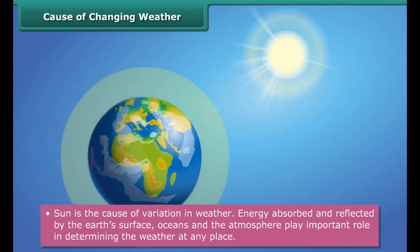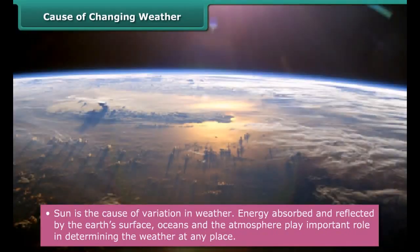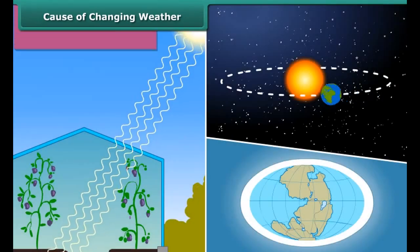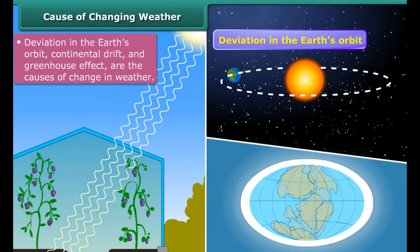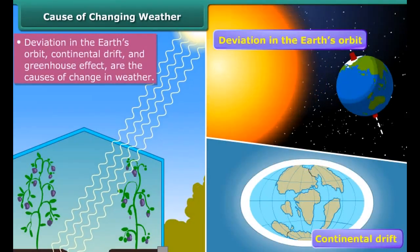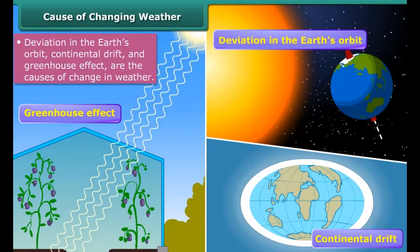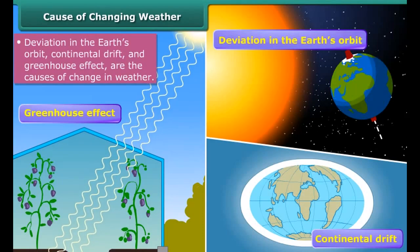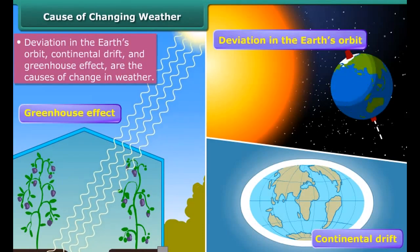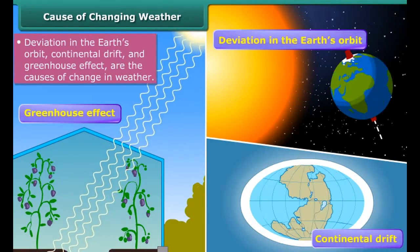Weather at any place is also affected by deviation in the Earth's orbit, continental drift, and the greenhouse effect, which are additional causes of changes in weather.